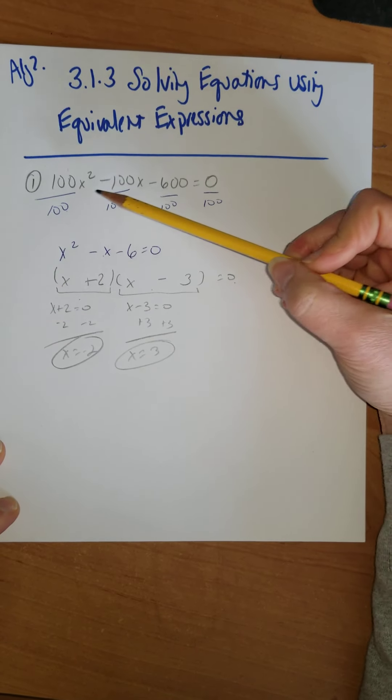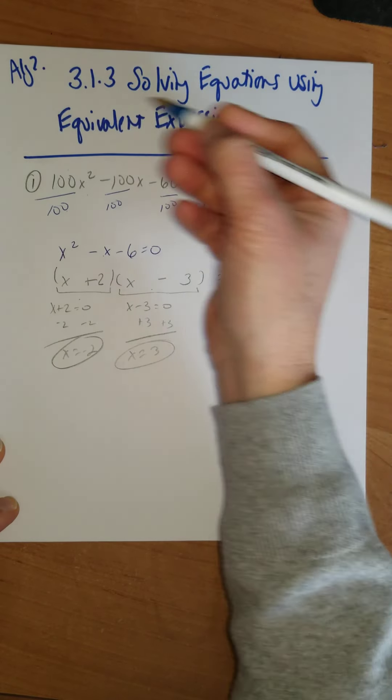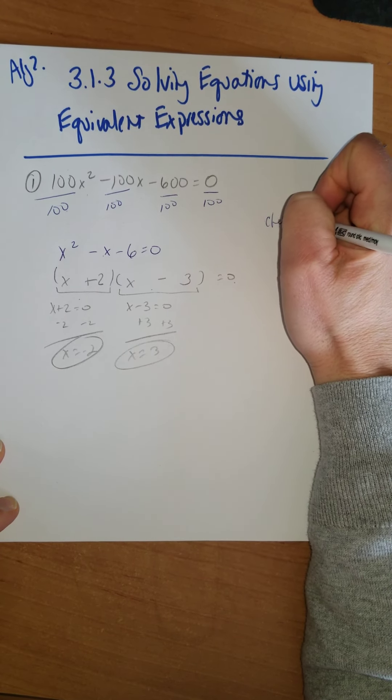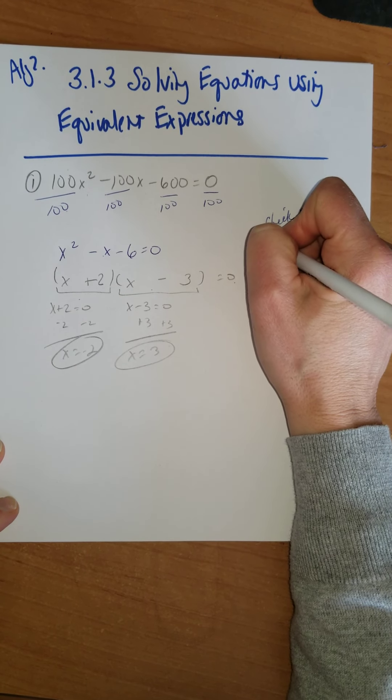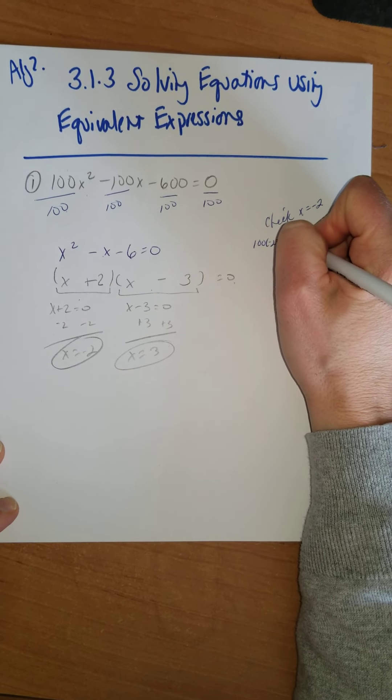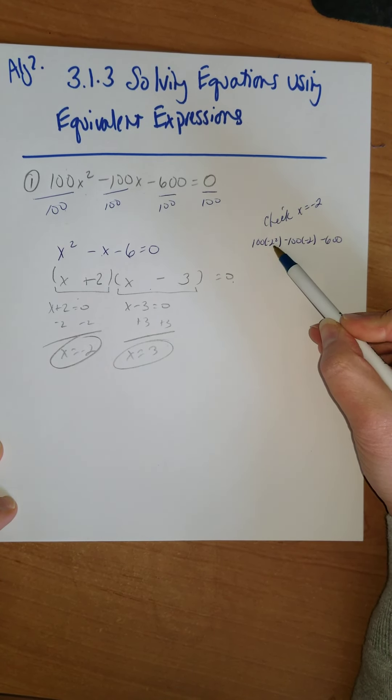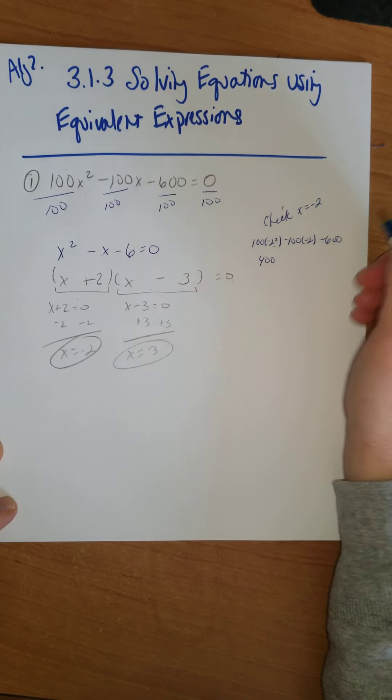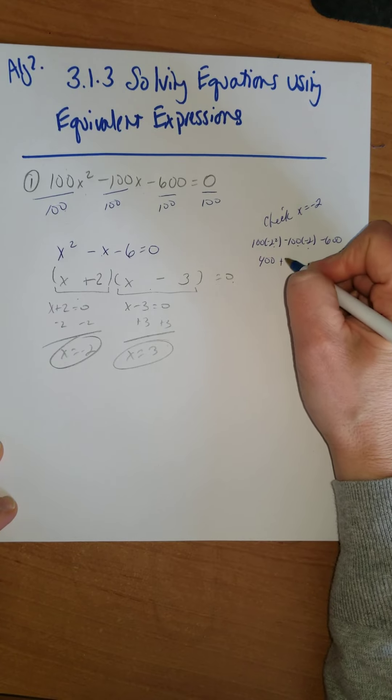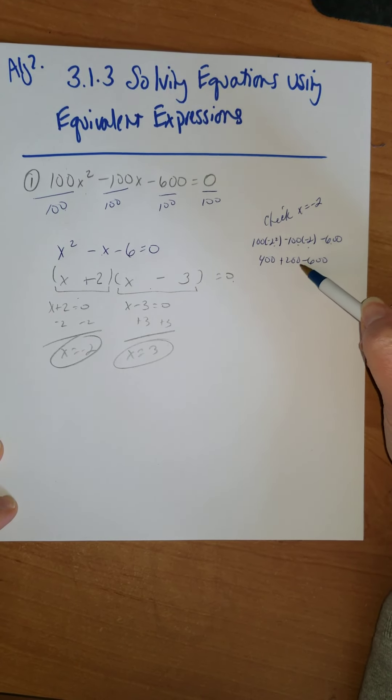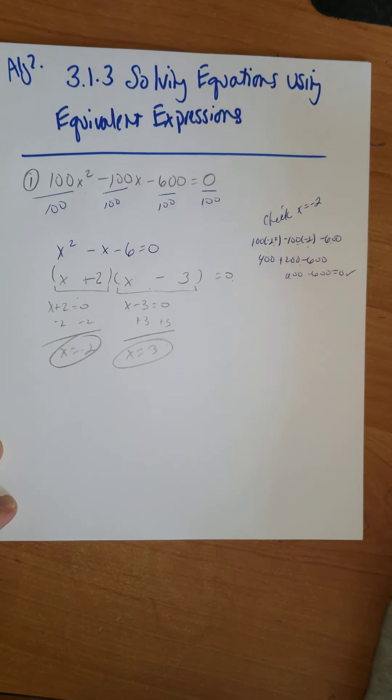So what that means is I can put -2 in for x in both of these, and it should be equal to 0. So let's do a quick check. So it's going to be 100 times (-2)² - 100 times (-2) - 600. Negative 2 squared is 4. 4 times 100 is 400. Negative 100 times -2 would give me plus 200, and that's minus 600. 400 plus 200 is 600. Minus 600, that equals 0, and that checks.